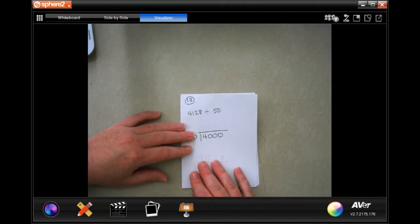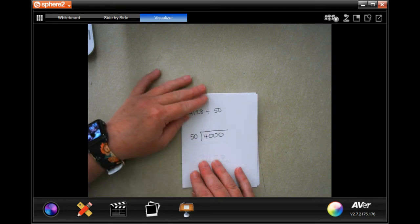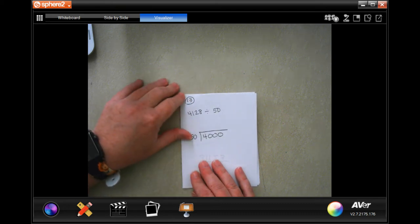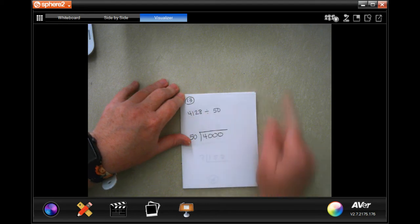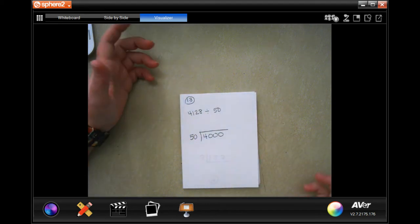By the way, for numbers 9 through 12, when it says use compatible numbers to find the estimate for the quotient, quotient just means divide. That's all we're doing today is dividing.